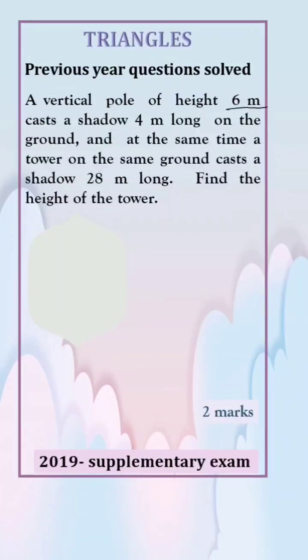In the question, it is given that a vertical pole is of height 6 meters. Let AB be the vertical pole and AC be the shadow. Its length is 4 meters.